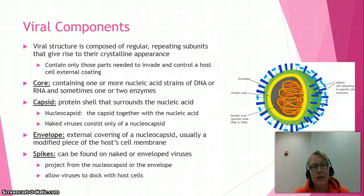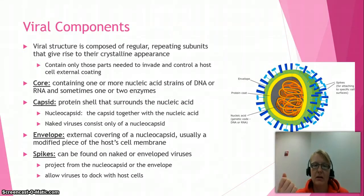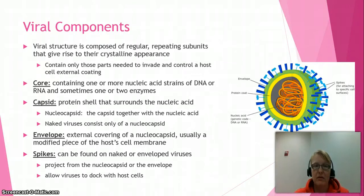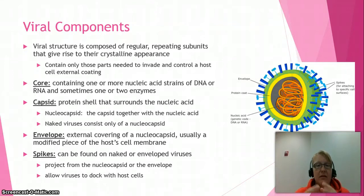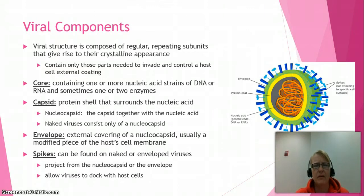All viruses have at least two things: a core that contains genetic information — either DNA or RNA — and a capsid, which is a protective protein coat. This protein coat comes in a variety of shapes. Some viruses also have envelopes, and some have spikes that come out of them. We most often see pictures of spherical viruses with spikes, but that's just one representative — they come in a lot of different shapes and sizes.